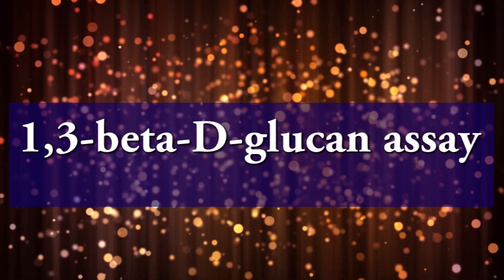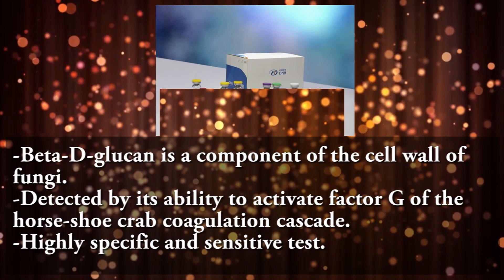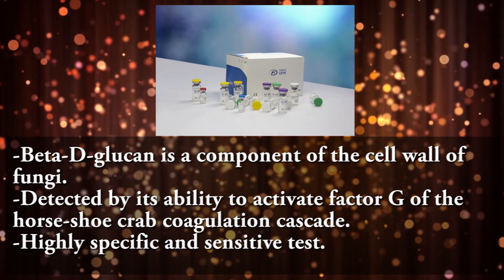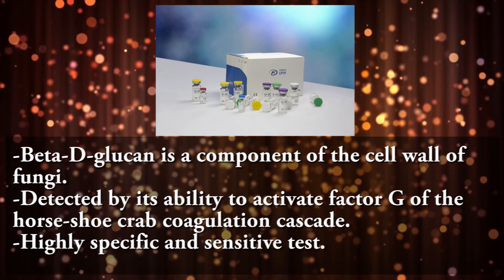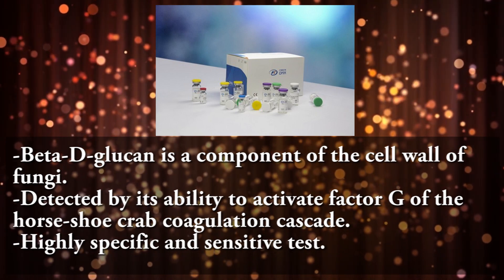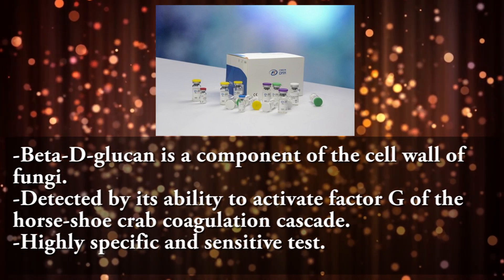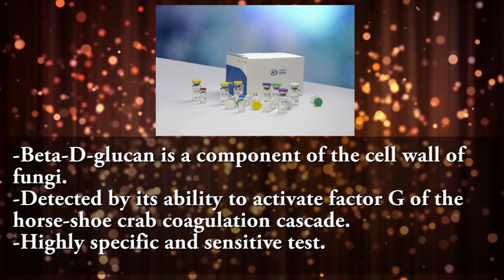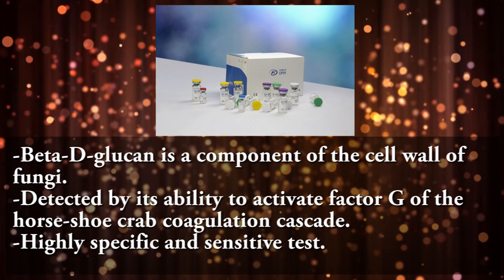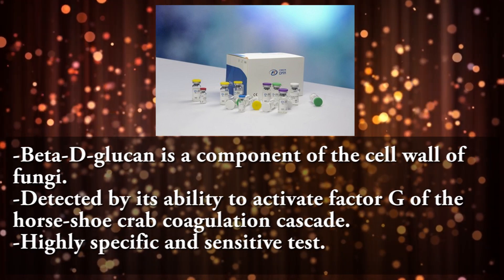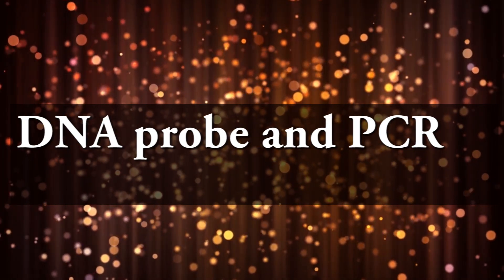The 1-3-Beta-D-glucan assay: Beta-D-glucan is a component of the cell wall of fungi, detected by its ability to activate Factor G of the host through the coagulation cascade. This is a highly specific and sensitive test. Additionally, DNA probe and PCR methods are available for identification.